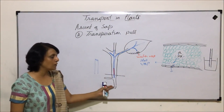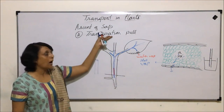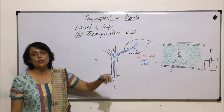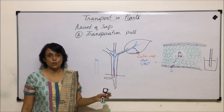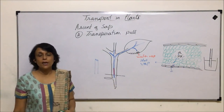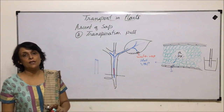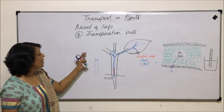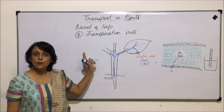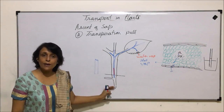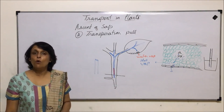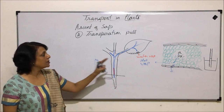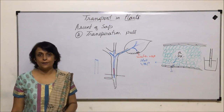In the case of food transport, we will see that the movement takes place in multiple directions. So through absorption of water from root hair and ascent of sap, water reaches each and every part of the plant.